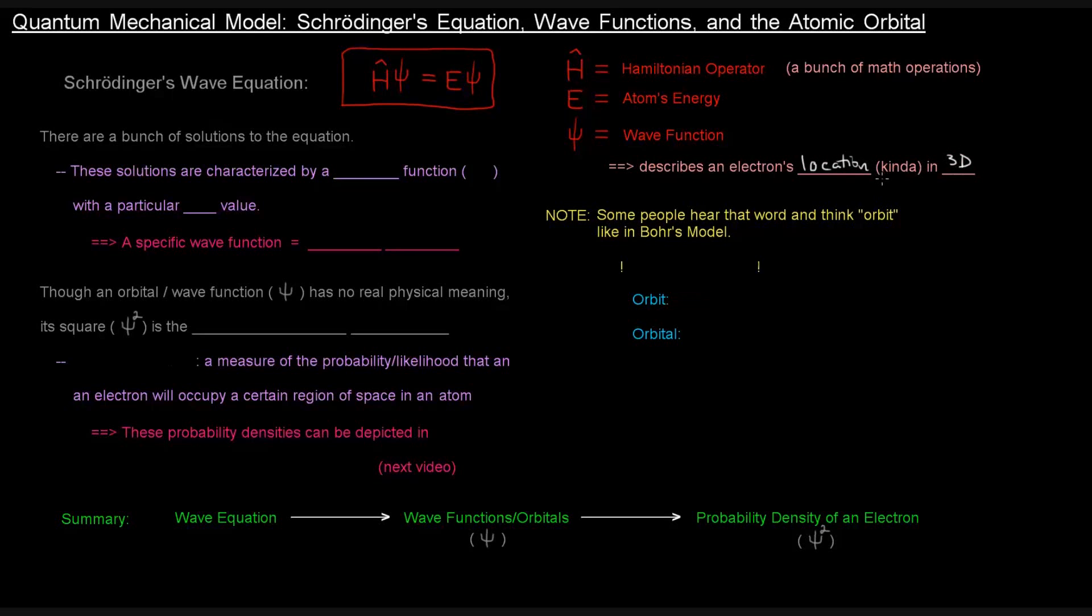I put the word kinda here, because it's not exactly like that. So, there are a bunch of solutions to Schrödinger's Wave Equation, and these solutions are characterized by a wave function, psi. And that psi has, those different solutions, those different wave functions, have particular energy values.